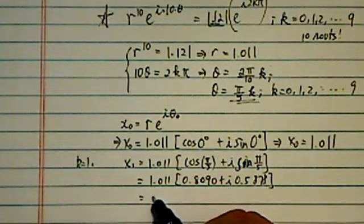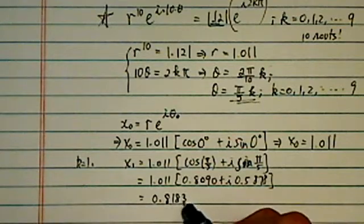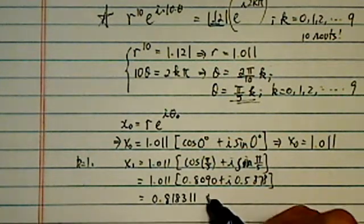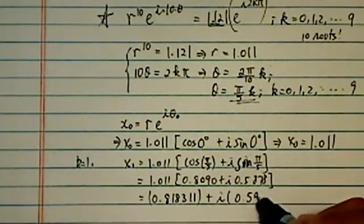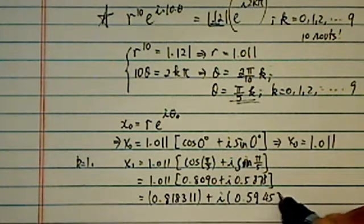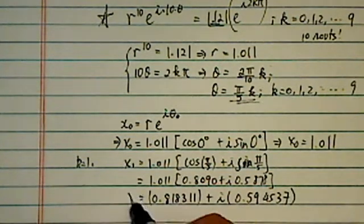So the answer coming out is 0.818311, it's probably more decimal than you need. Imaginary part is 0.594537. Okay, so this is the first root, and as you can see, I'm going to grab a computer-generated solution here.